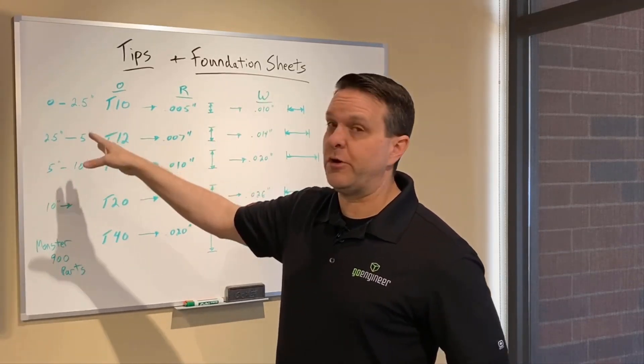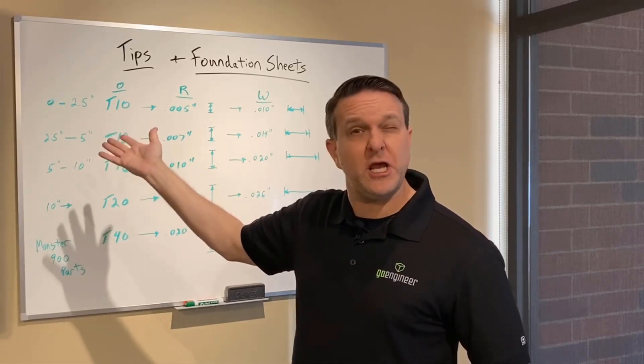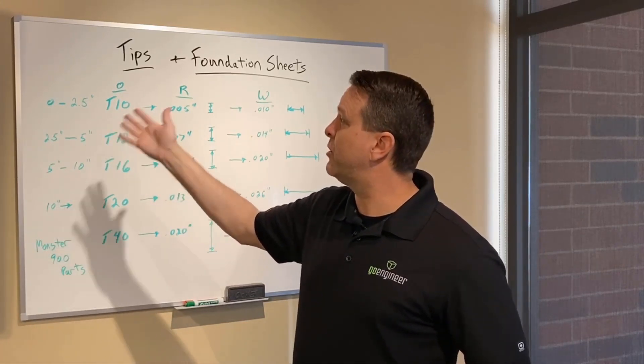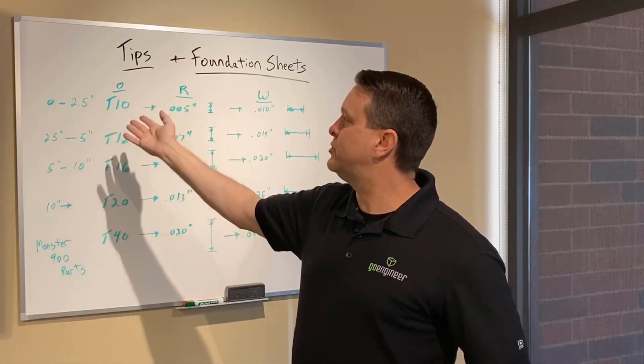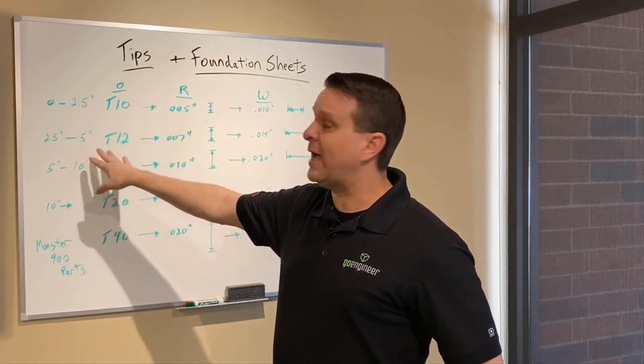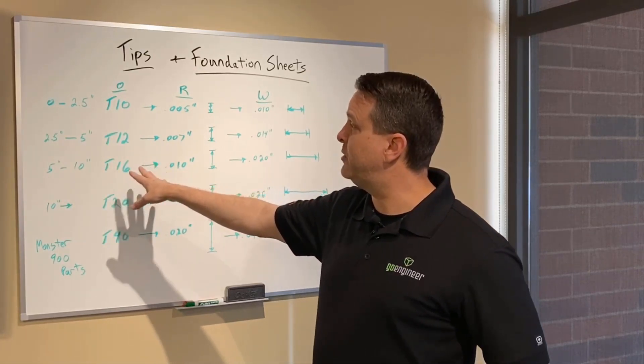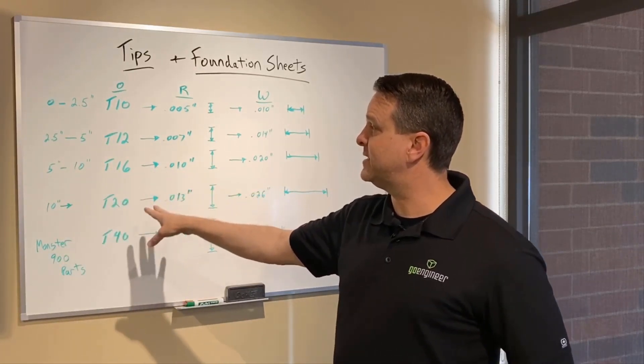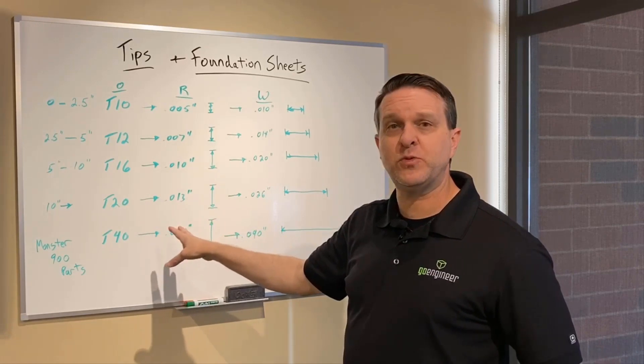If I'm at zero, nobody builds a zero inch part, but let's just say a half an inch. If I'm at zero to half an inch to two and a half inches, you'd want to look at a T10. If you get from two and a half to five, a T12 would be good. A 5 to 10, 16, and a 10 on up to T20.